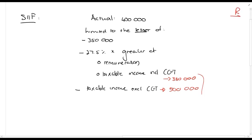You want to know how much of this 400,000 rands can we deduct. In this case, the lesser of these amounts is 350,000 rands, so you can deduct 350,000 rands. You contributed 400,000 but you're only deducting 350,000.